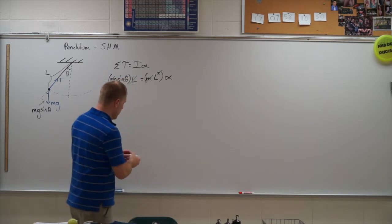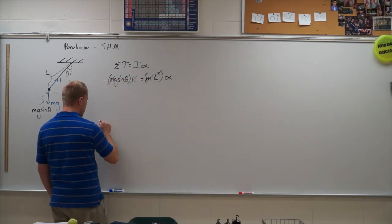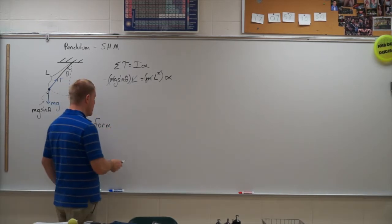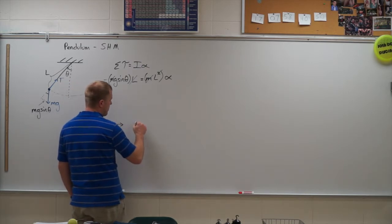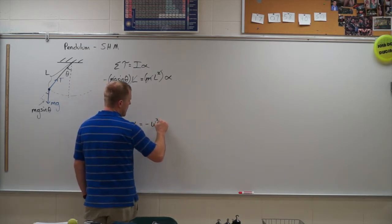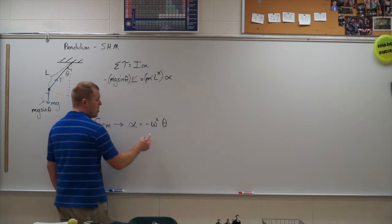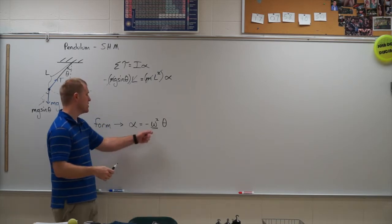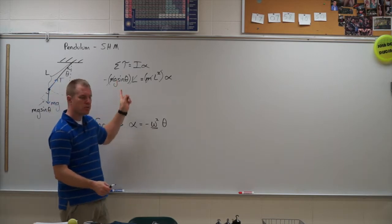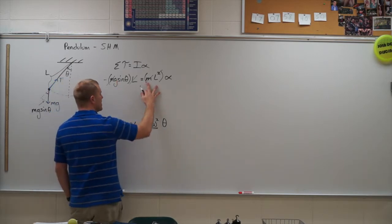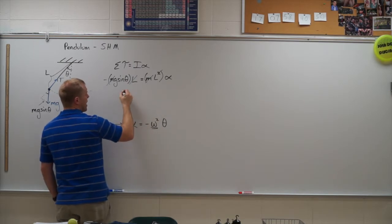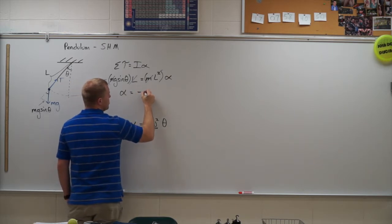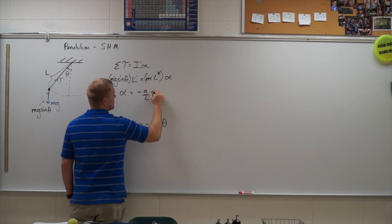Now ideally we want to get into the form, and this goes back to our simple harmonic motion, what our goal is here for a function is I want to have the form of alpha equals negative omega squared times theta, where this is my angular frequency, not my angular velocity, my angular frequency. So this is a constant value as that pendulum swings back and forth. So I look at this and I go, okay, let's move some of this around. So I have alpha is equal to negative G over L times the sine of theta.